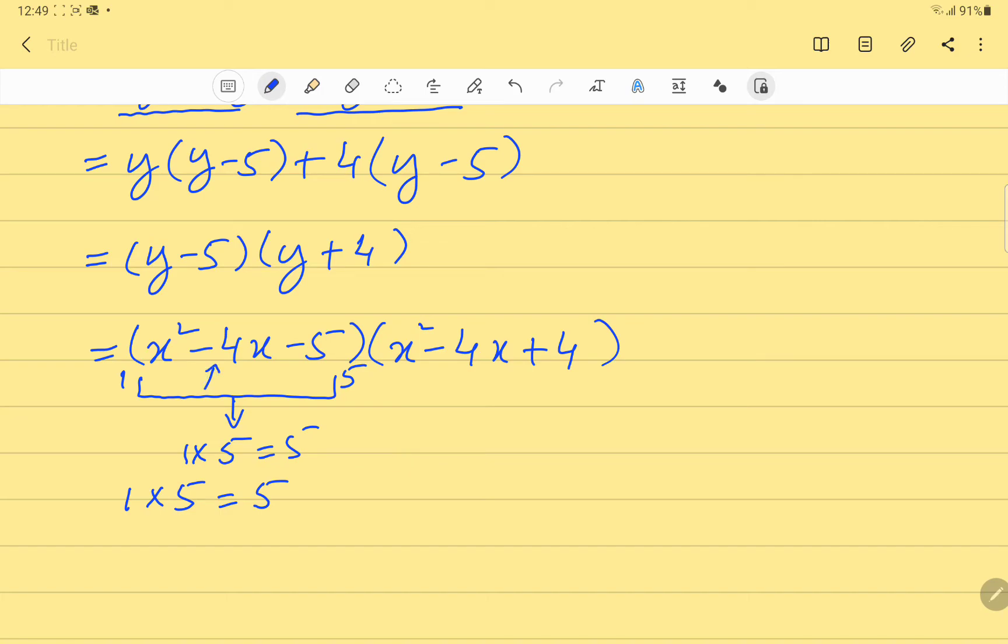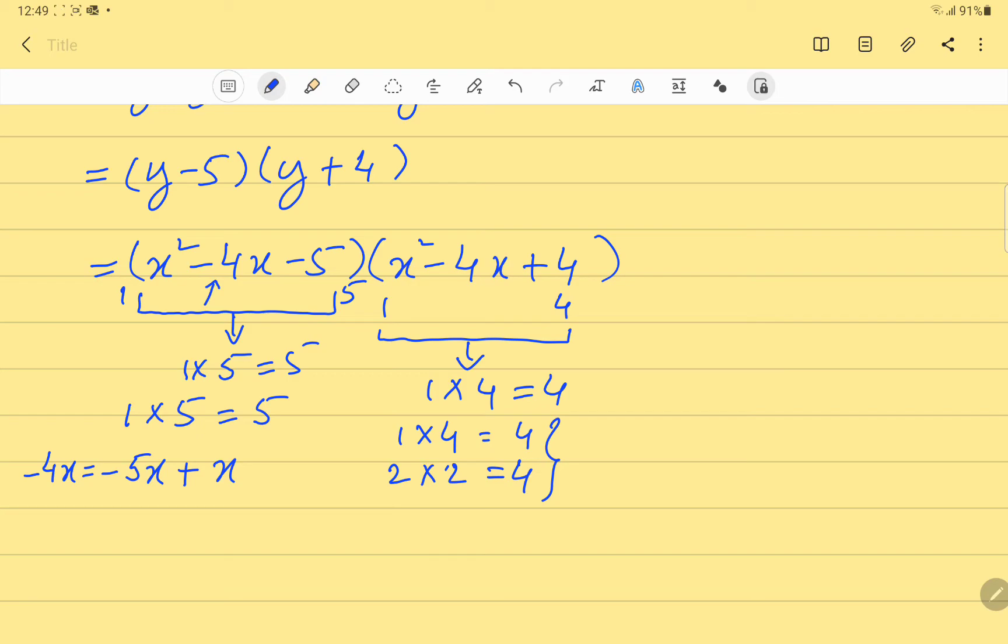Now come to the second one. Again coefficient of x squared is 1. Here we have 4, so 1 into 4 is 4. Let's write all its pairs of factors. The first one is 1 into 4 and the second one is 2 into 2. Now out of these two pairs of factors, which one of them can give us 4 if we add both the factors or we subtract both the factors? Obviously this is the one. So if we add minus 2 and minus 2 we can get minus 4. So instead of minus 4x we can write minus 2x minus 2x.